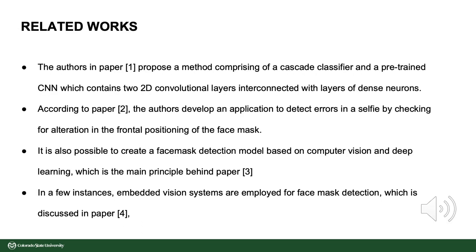The authors in paper 1 propose a method comprising a cascade classifier and a pretrained CNN which contains two 2D convolution layers interconnected with layers of dense neurons. According to paper 2, the authors develop an application to detect errors in a selfie by checking for alteration in the frontal position of the face mask. It is also possible to create a face mask detection model based on computer vision and deep learning, which is the main principle behind this paper. In a few instances, embedded vision systems are employed for face mask detection, as discussed in paper 4.